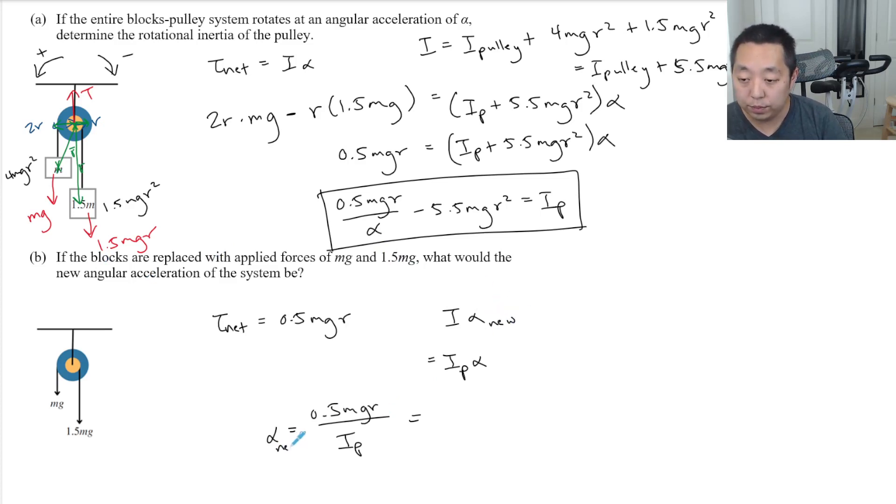But we found the I pulley from before. So we could say it's 0.5 MgR divided by 0.5 MgR over alpha minus 5.5 MgR squared.